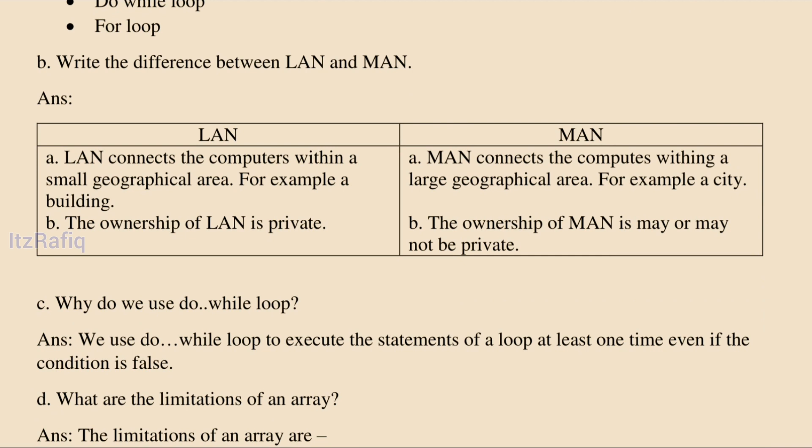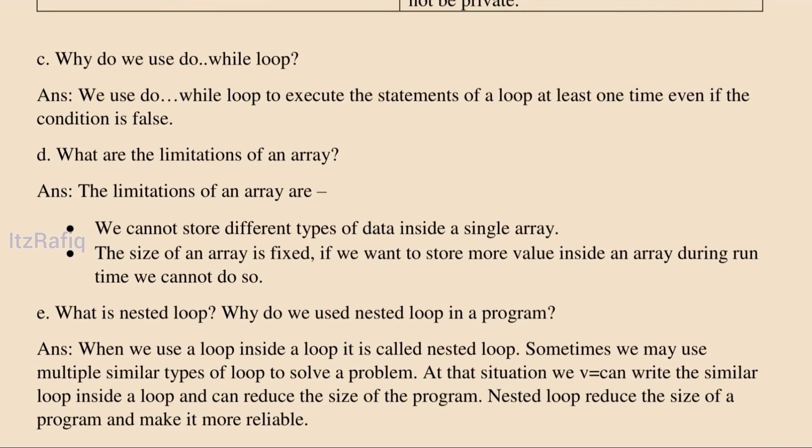Why do we use do-while loop? We use do-while loop to execute the statements of a loop at least once, even if the condition is false.